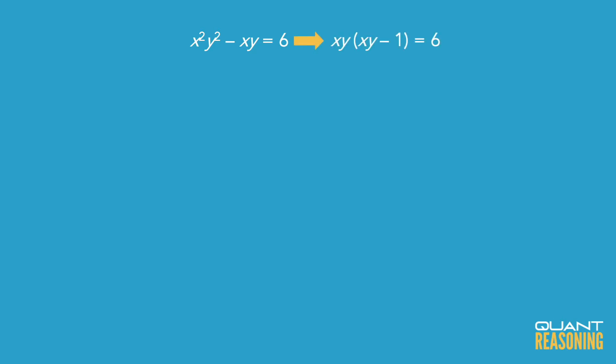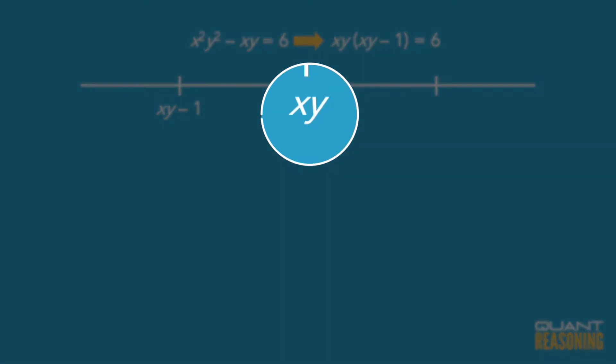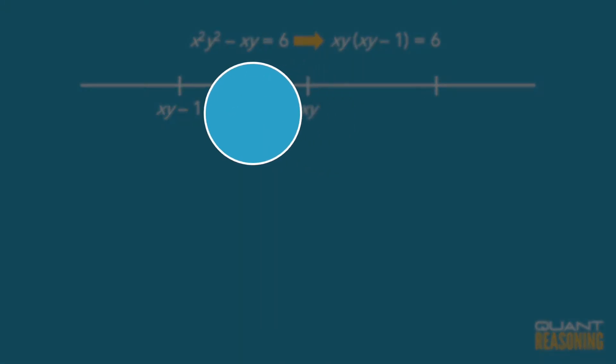So I can pull that out as a common factor, the xy, so I'd have xy times parentheses xy minus 1, and imagining that on a number line, I can say that if xy is right there, then where is xy minus 1? It would be just one unit to the left of xy.